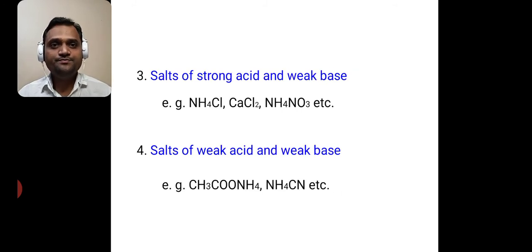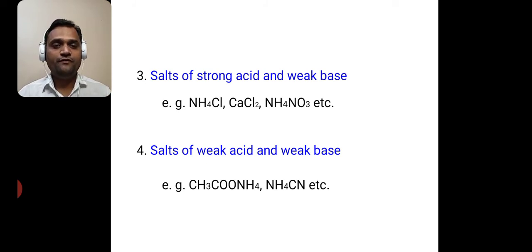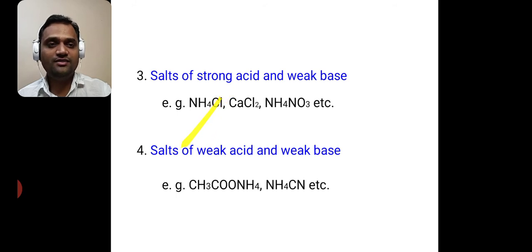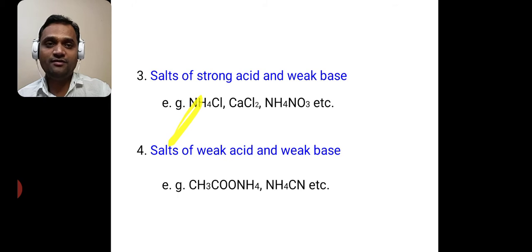The third type is salts of strong acid and weak base. For example, ammonium chloride, calcium chloride, ammonium nitrate, etc. NH₄Cl is made up from HCl, a strong acid, and NH₄OH, a weak base. So it is a salt of strong acid and weak base.